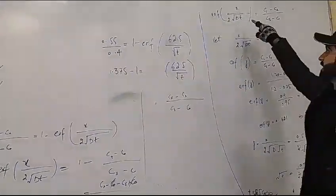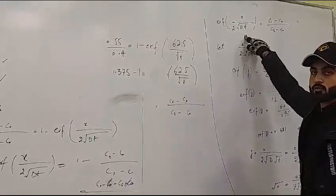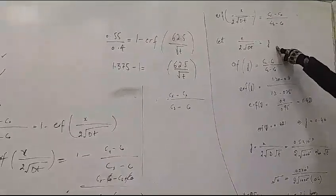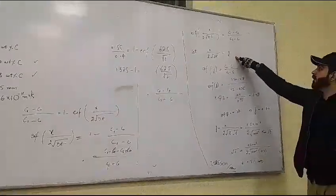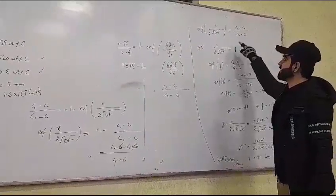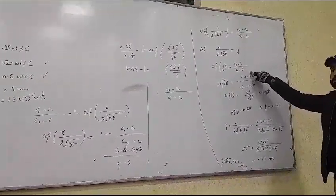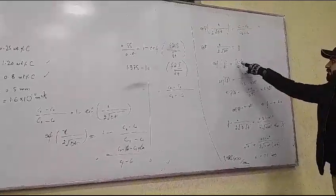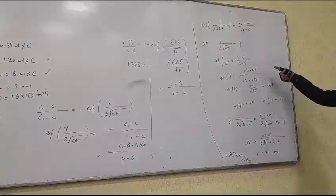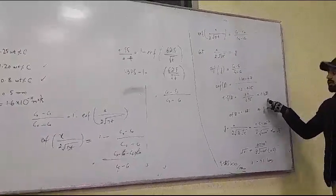Let z = x / (2√(Dt)). Substituting z, the equation becomes erf(z) = (Cs − Cx) / (Cs − C₀). Substituting the values of concentration at surface, at point x, and at depth, we finally get erf(z) = 0.421.